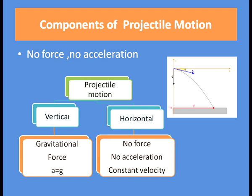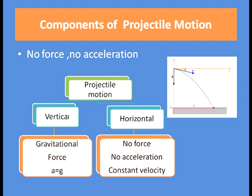In the case of the horizontal component, no force is applied in the horizontal direction, so there is no acceleration and the velocity will be constant. The vertical component has one force component, that is gravitational force. Hence, as force is applied, there will be acceleration equal to the acceleration due to gravity, so a equals g. The velocity component in the vertical direction is in accelerated motion.